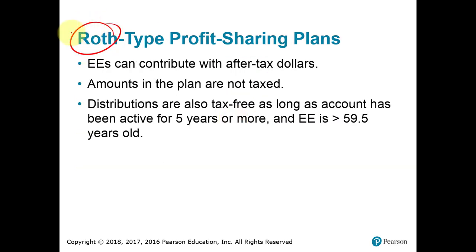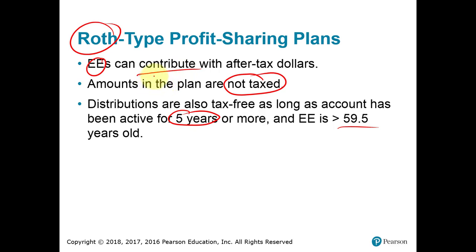Whenever you hear the term Roth, that implies there is no immediate deduction to the employee. The benefit of a Roth is that it's not going to be taxed when you have a qualifying distribution. Typically a qualifying distribution means you had a Roth account for at least five years and you're going to take the distribution after age 59½. If you take the distribution out early, possibly the earnings — not the contribution — could be taxable, and there's going to be a 10% penalty on those earnings for an early distribution. Again, with Roth: no deduction up front, but tax-free when you take the money out.